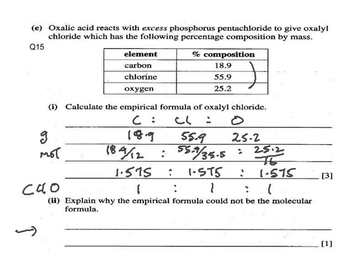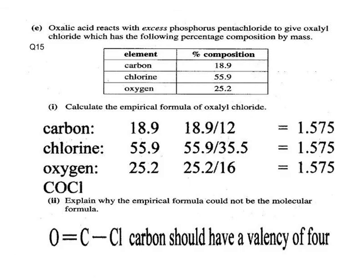Thinking about the valencies: carbon's valency is 4, chlorine's valency is 1, oxygen's valency is 2. We could connect carbon to Cl with a single bond and have a double bond to oxygen. The chlorine is satisfied with valency 1, oxygen is satisfied with valency 2, but the carbon only has 3 bonds and needs 4 — so the structure is not yet complete.